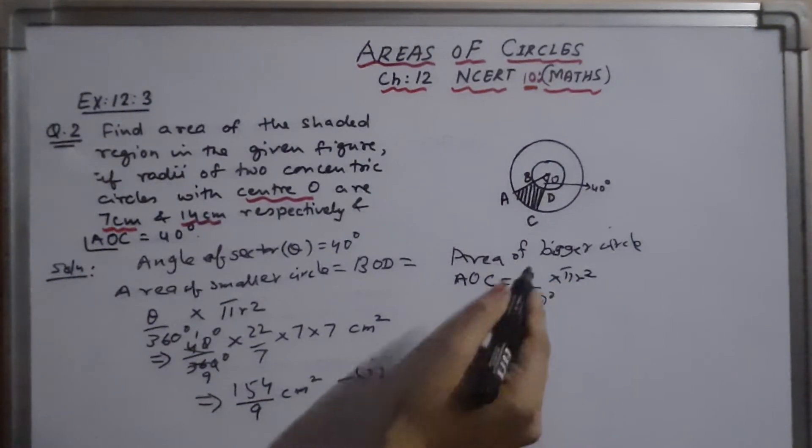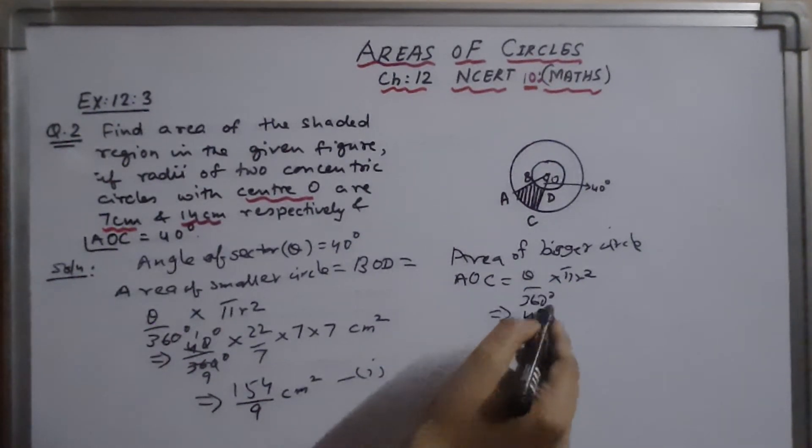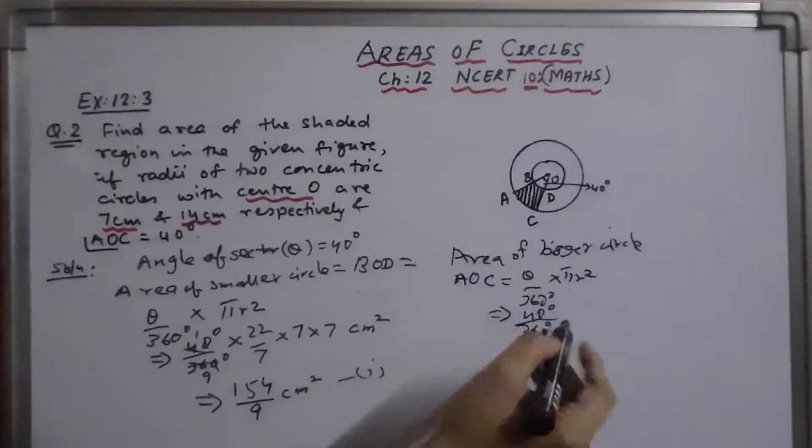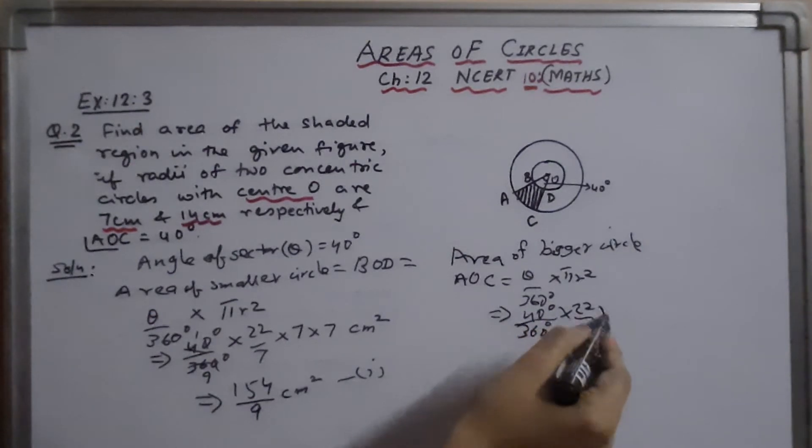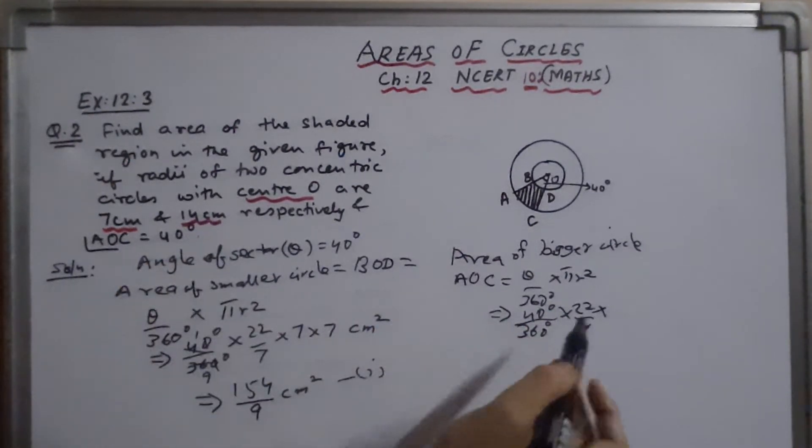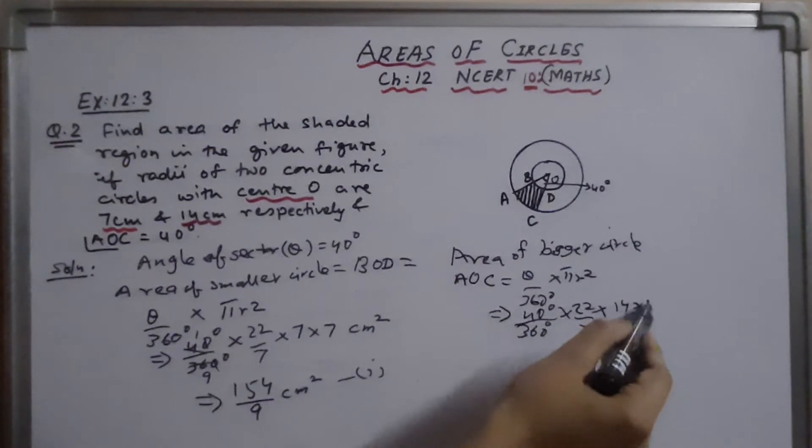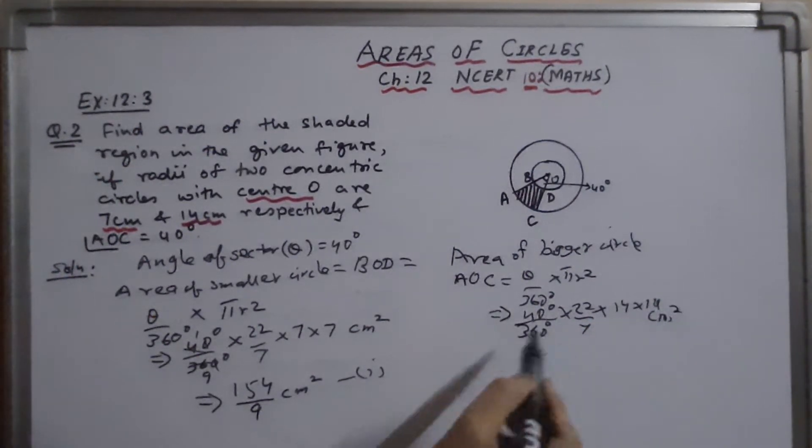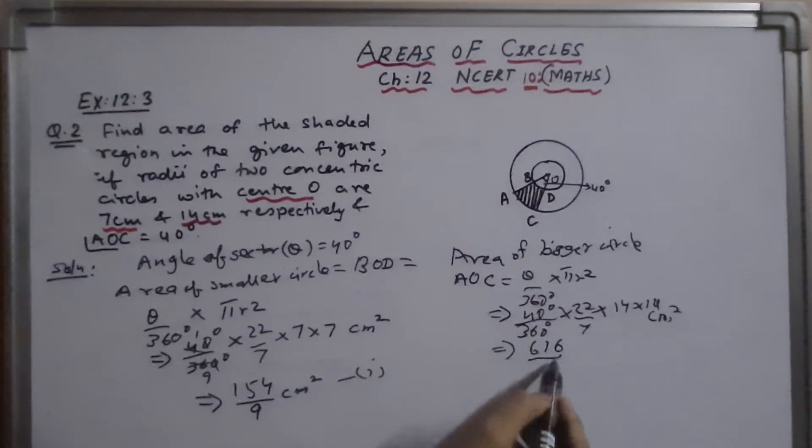Again, theta is 40 degrees upon 360 degrees into pi, 22 by 7. And here R is second radius, is 14. 14 into 14 cm square. So on calculating, it will be 616 upon 9 cm square.